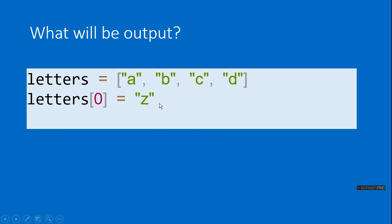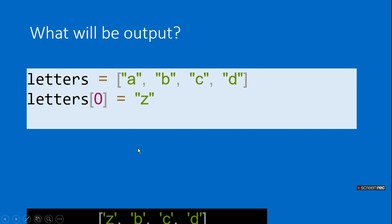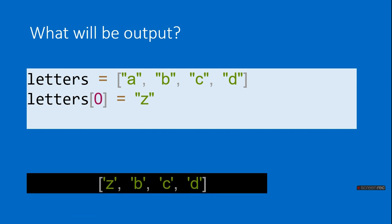letter[0] = 'Z'. What will the letter list become after using letter[0] = 'Z'? The answer is ['Z', 'B', 'C', 'D'] — 'A' becomes 'Z' because we are assigning the value 'Z' at index zero.